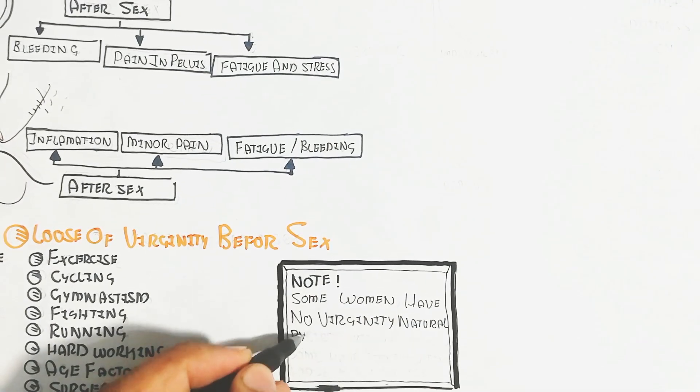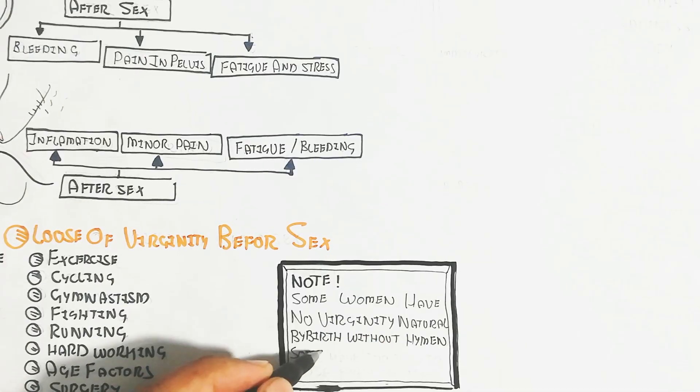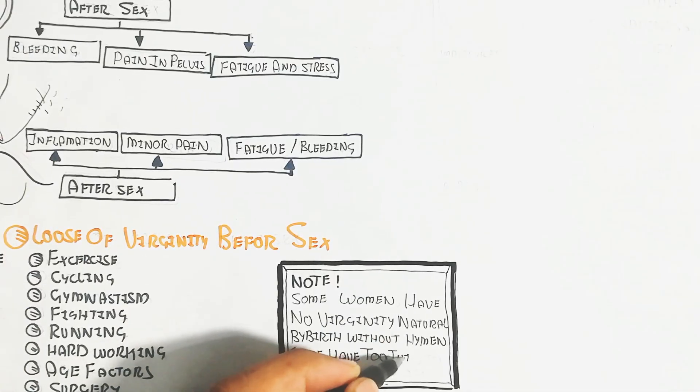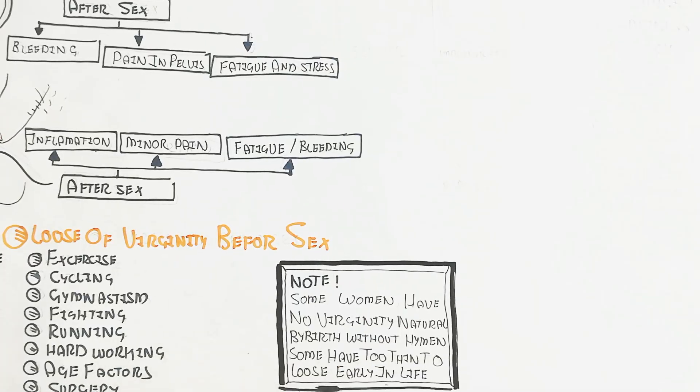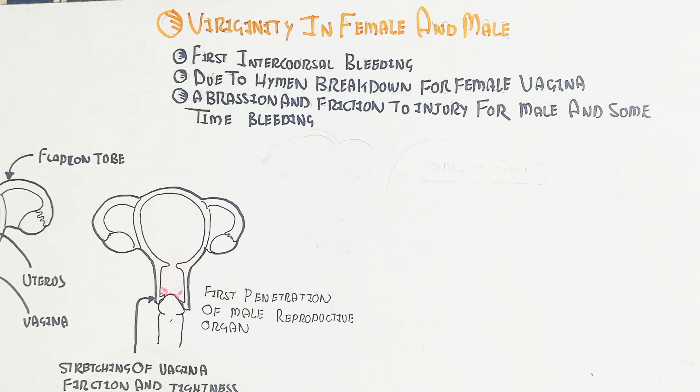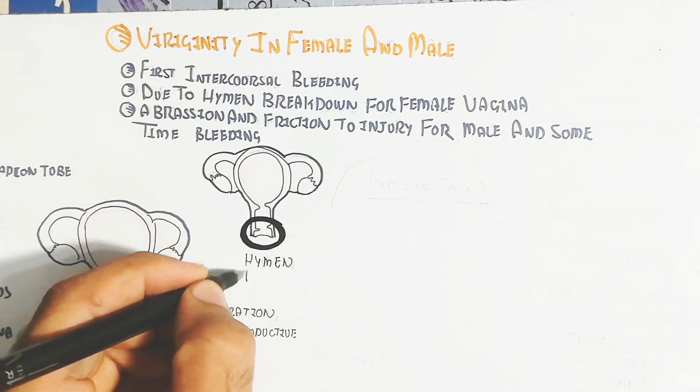So it means virginity verification through bleeding is not 100% accurate for virginity loss. We can't say that this female is virgin or non-virgin.